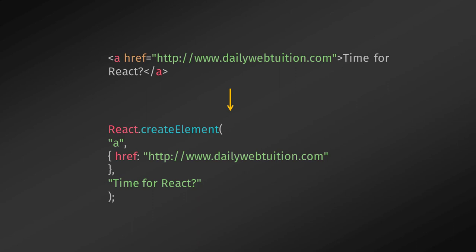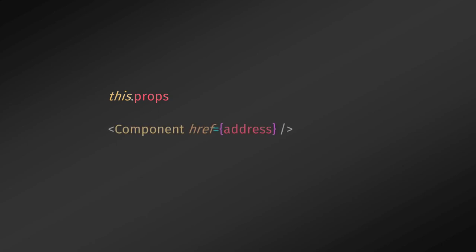If you want to reuse the link component, the href must change to reflect a different address each time. This is called dynamic setting of values versus hard-coding them. Next, we'll go a step further and consider a component that uses dynamically generated values for attributes. To specify dynamic properties, you can use component properties with curly braces inside angle brackets.